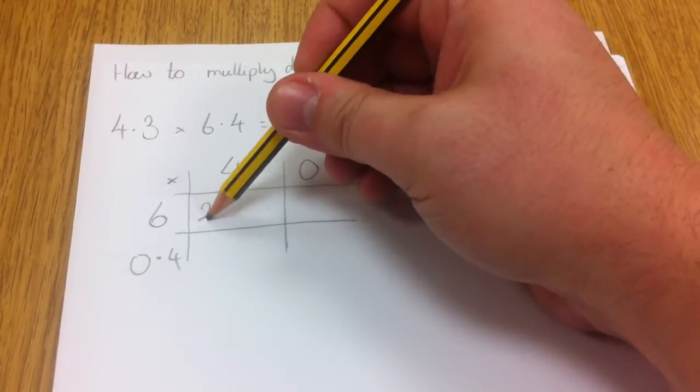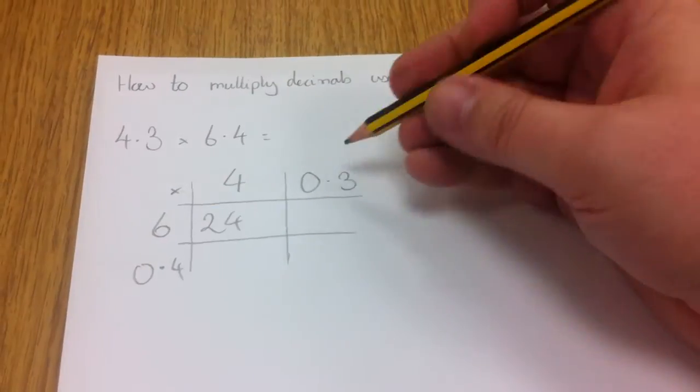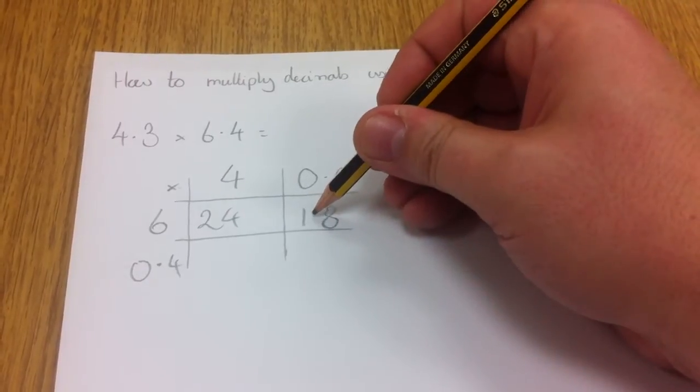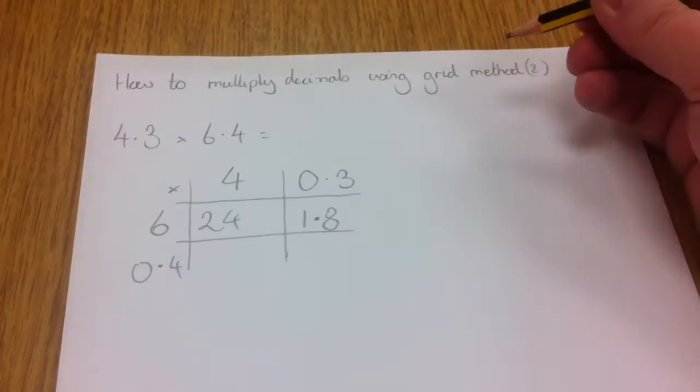6 times 4 is 24. 6 times 3 is 18. So 6 times 0.3 is 10 times smaller. It's 1.8.